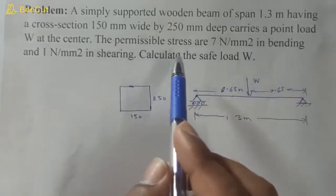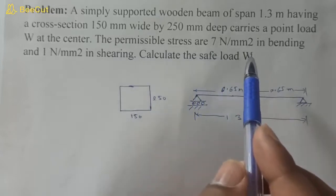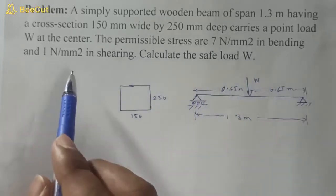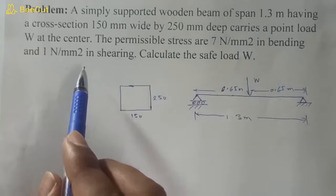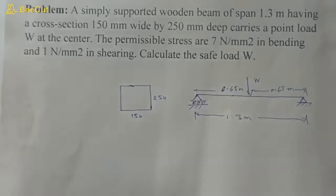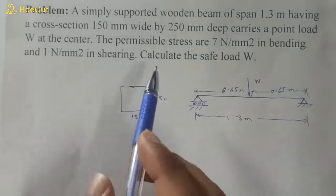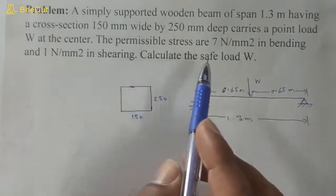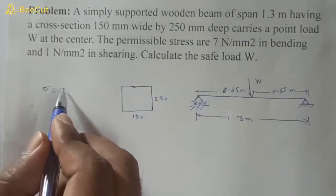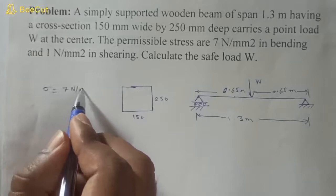The permissible stresses are: 7 N/mm² in bending and 1 N/mm² in shearing. So permissible stress in bending, sigma, equals 7 N/mm², and permissible shear stress, tau, equals 1 N/mm².